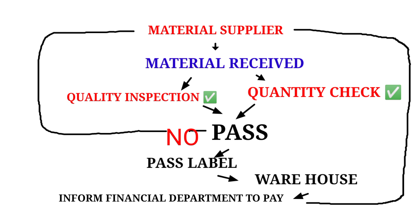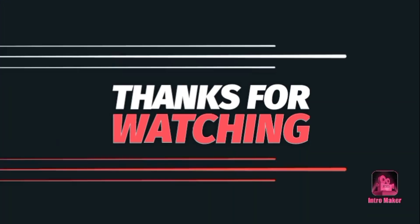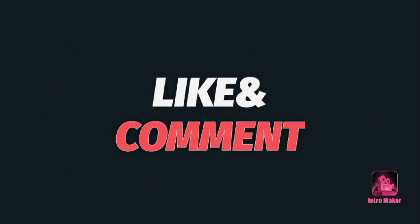If the materials do not meet the specifications during the quality and quantity check, they are sent back to the supplier. If they do meet the specifications, payment is transferred to the supplier. Thank you for watching — see you in the next video with more information related to the QC department.